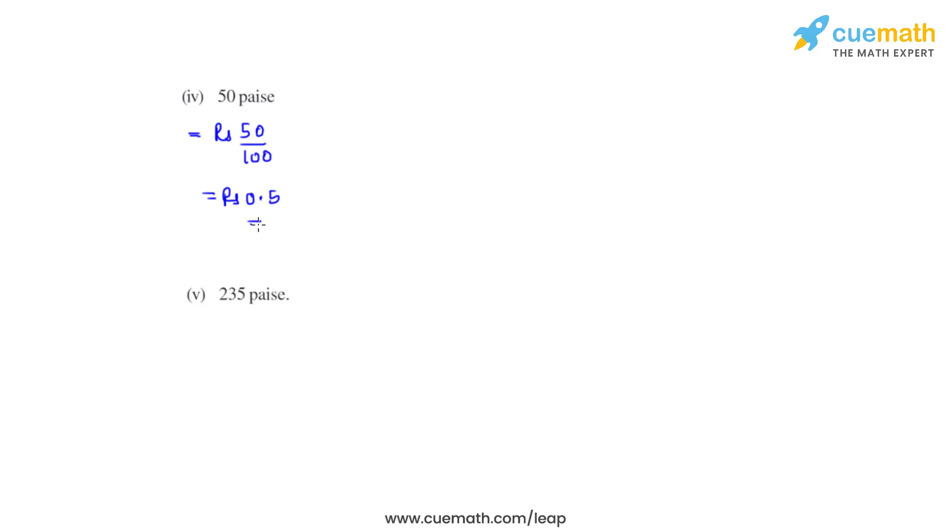Now coming to the last bit of this question which is the fifth bit, we have 235 paise, so that in rupees can be written as 235 divided by 100 and that gives us the answer as rupees 2.35.